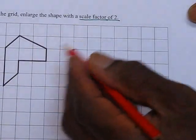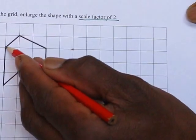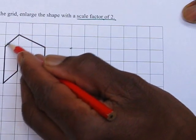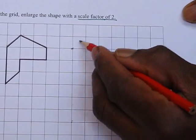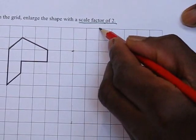This length here on a diagonal is only 1 diagonal. So the new length will be twice as long so it will be 2 diagonals, 1, 2 and it will go to here.